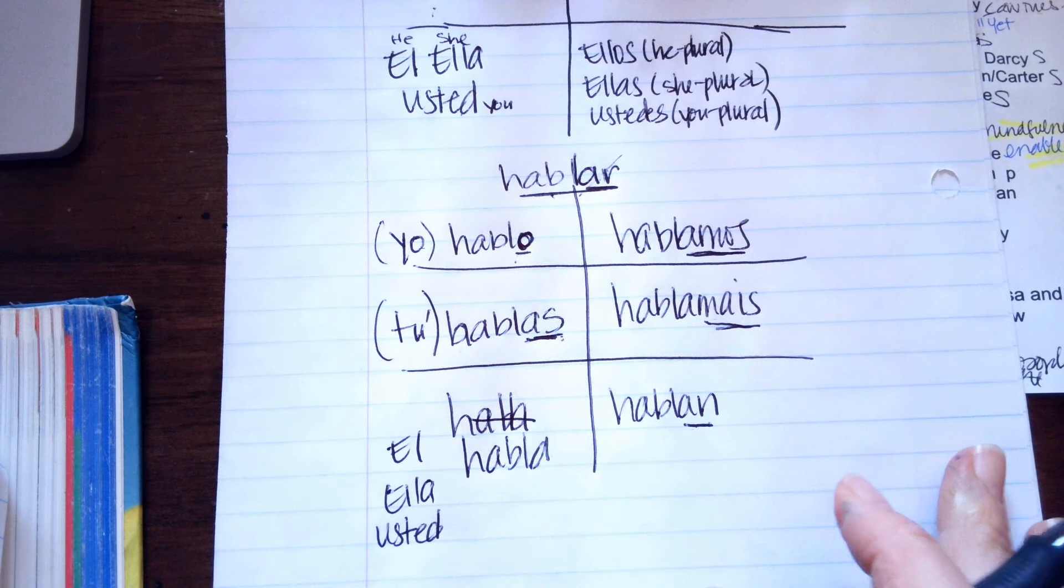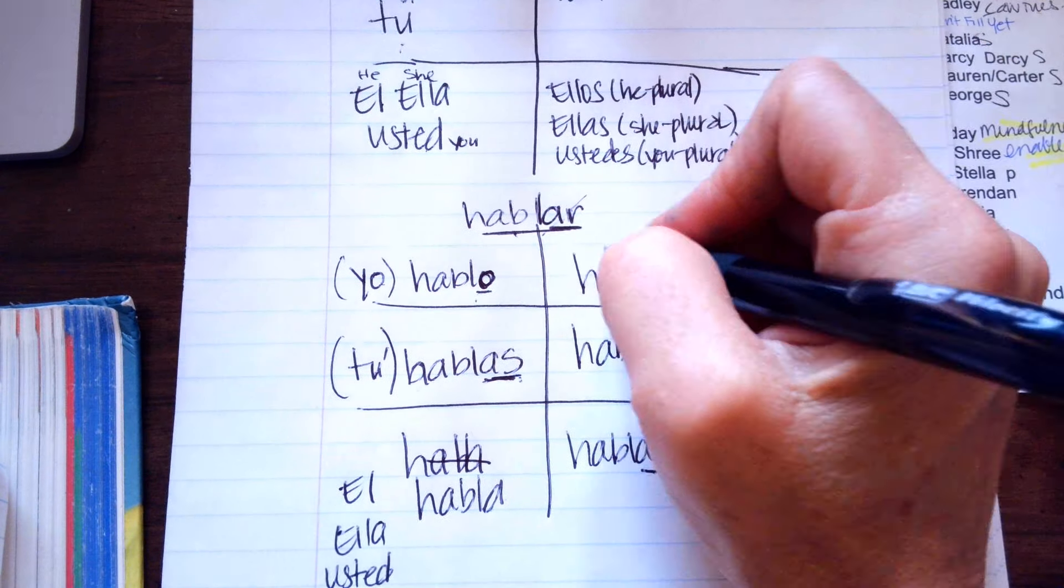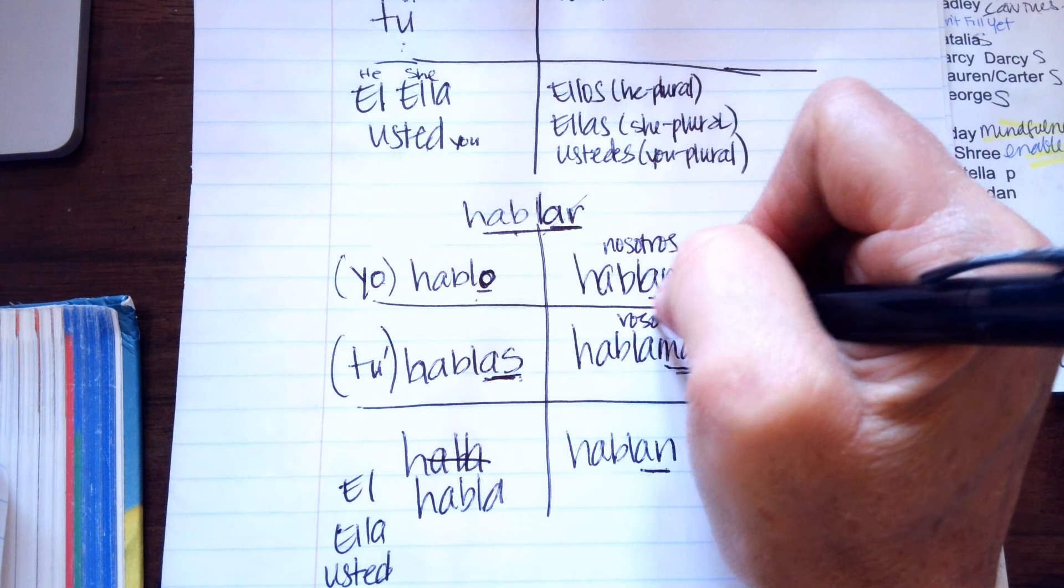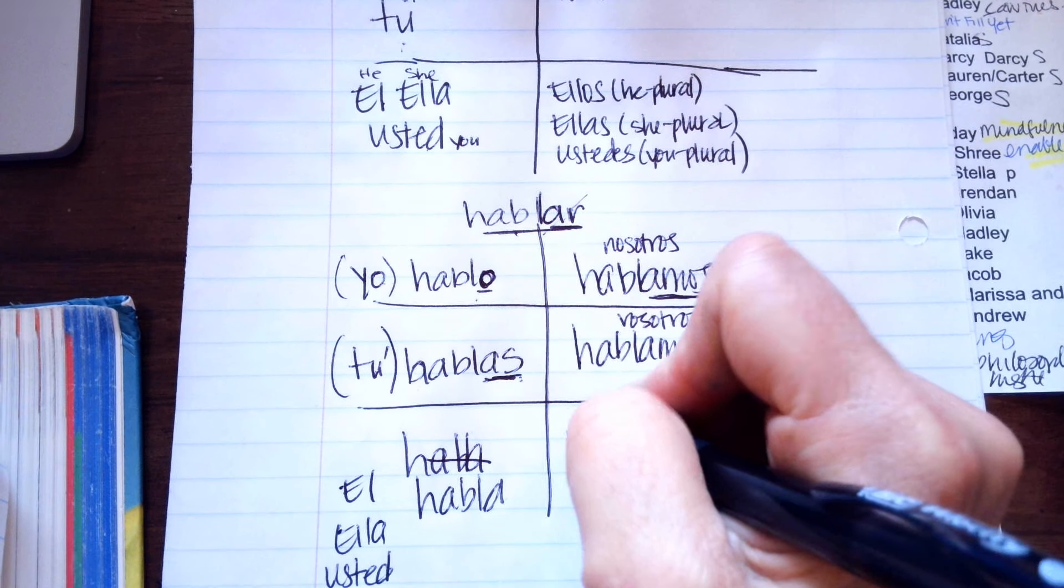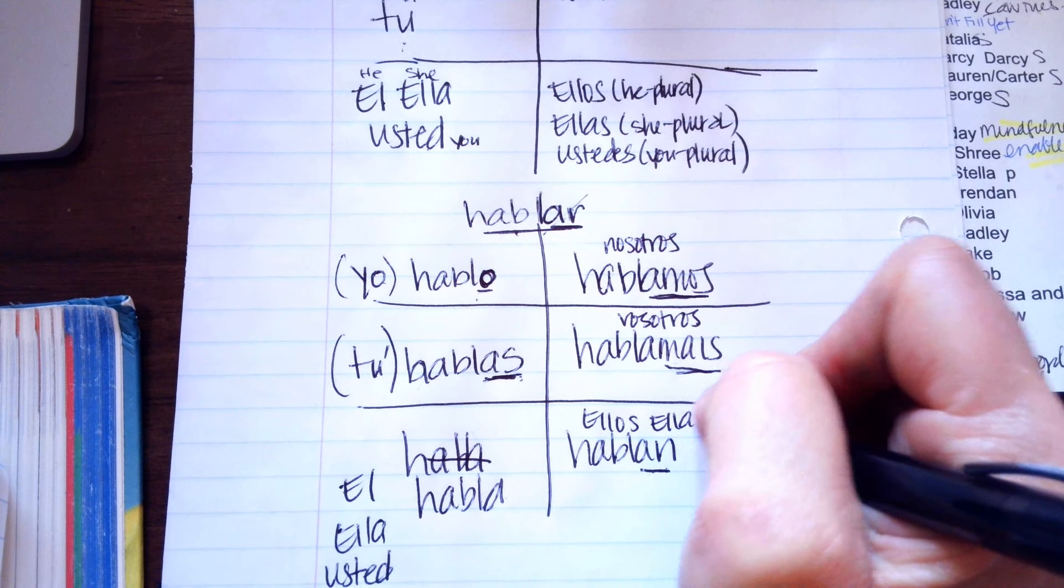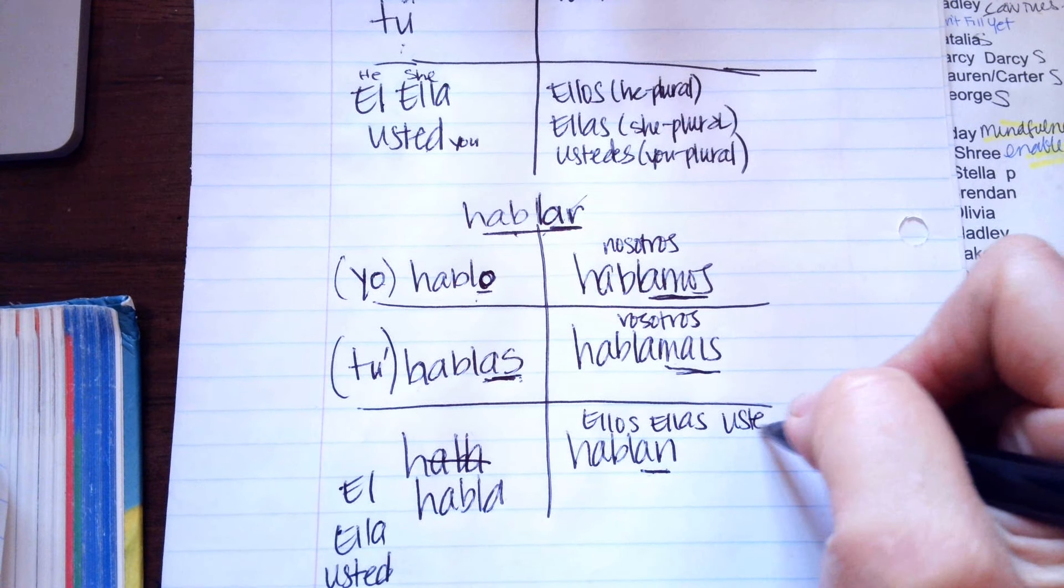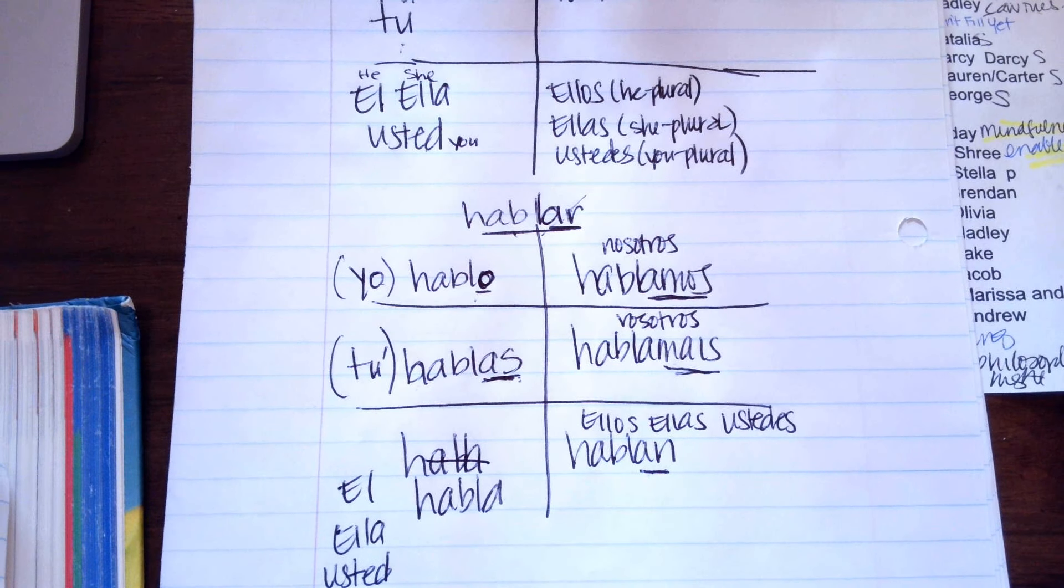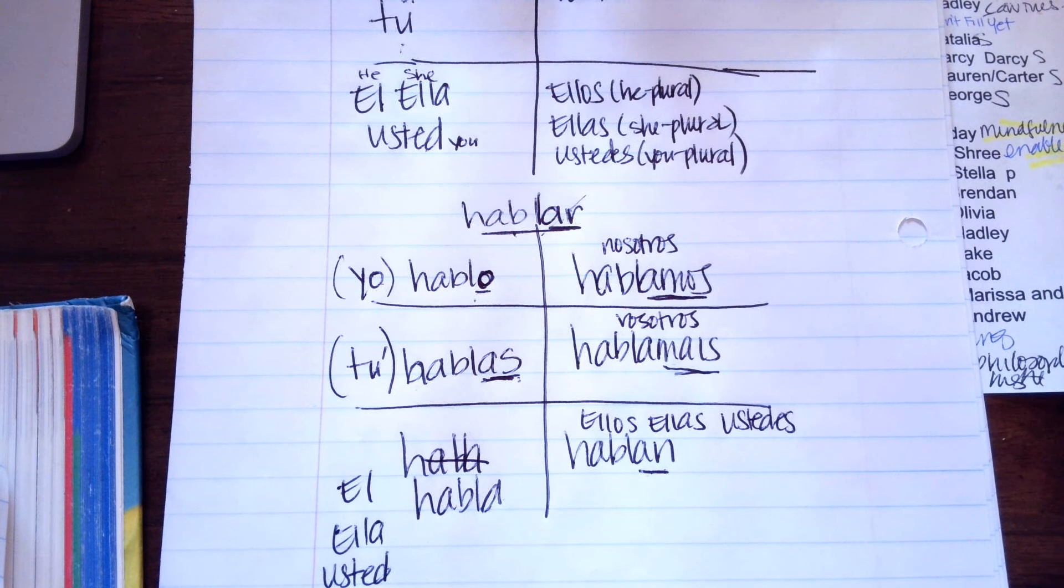Habla. And then this one is the nosotros, vosotros, ellos, ellas, or ustedes. So, that is an AR verb. There's a few different verbs.